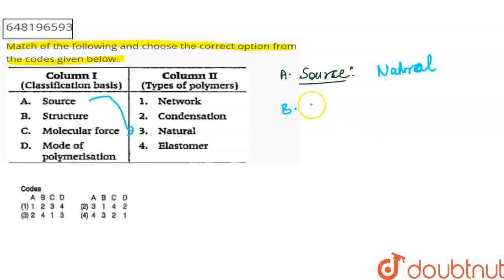Next, we have structure. On the basis of structure, we have polymers. They are classified as linear, branched, and network. So we have structure based on your network polymers, like Bakelite. It is a network polymer because we have networks.